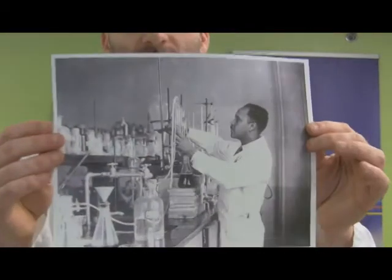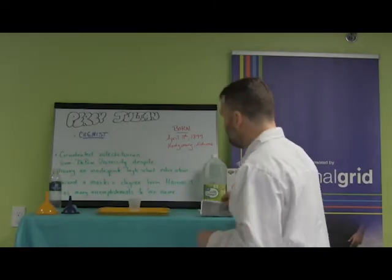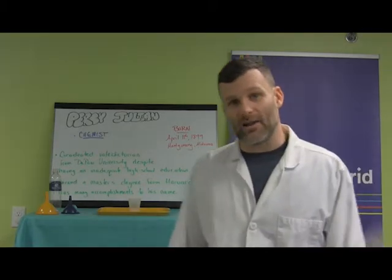So here's a picture of our friend Percy Julian who as you can see by the picture and by the words up on my board, he was a chemist. Now he was born on April 11th in 1899 in Montgomery, Alabama.